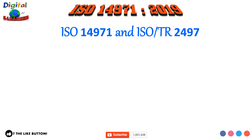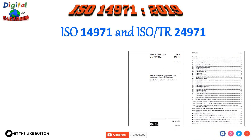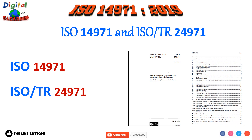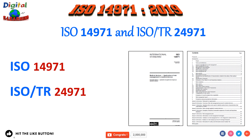ISO TS 24971 is a guidance document developed in parallel with the revision of ISO 14971. It has the same structure and number of clauses as the main ISO 14971 standard and helps to understand and implement each requirement. The standard is normally reviewed and revised every five years.